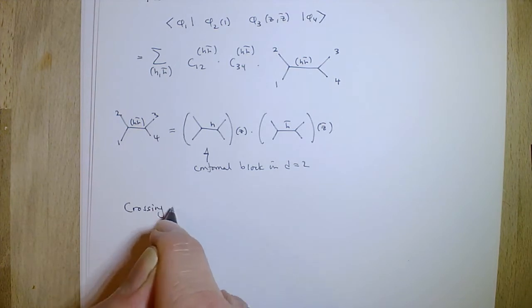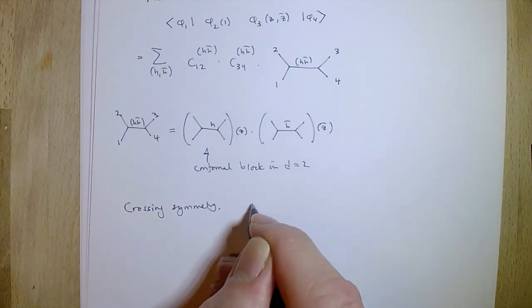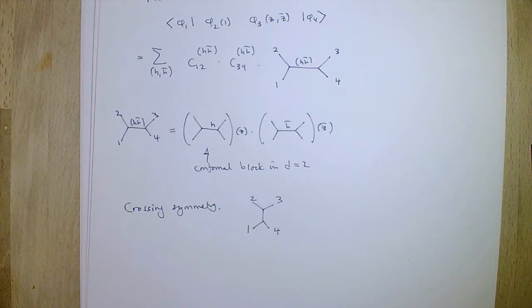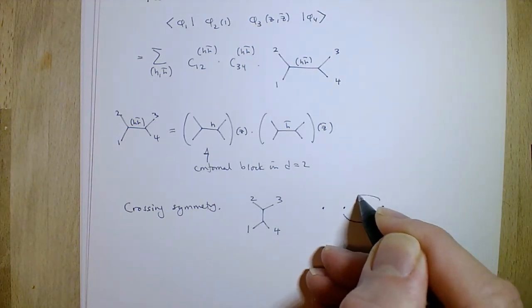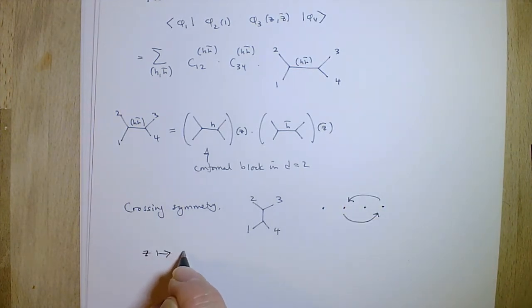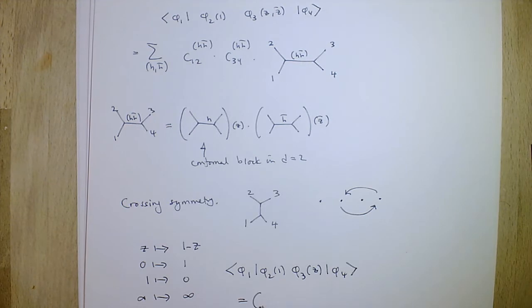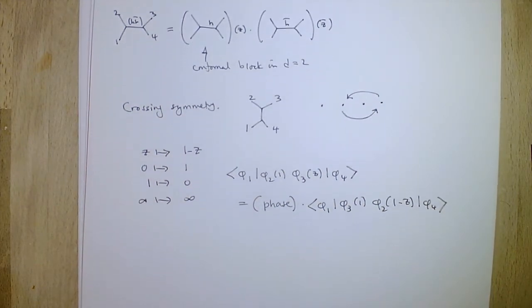We're talking here just about the global conformal group, and the same names and arguments work for the infinite-dimensional conformal group. Crossing symmetry relates an expansion over an internal channel between fields 1,2 versus moving it around — which involves a rotation, mapping z to 1-z. This phase is forgotten by some authors, but it's important; if you forget it some formulae can be wrong. I'll put a reference to a work with that phase worked out properly.